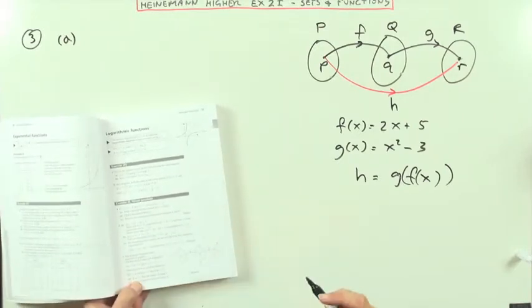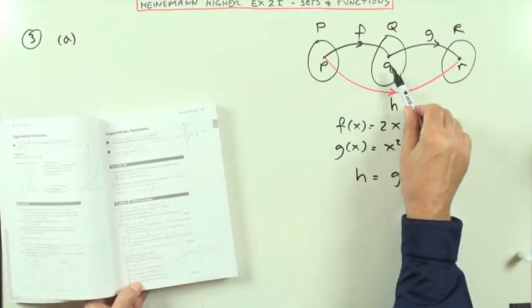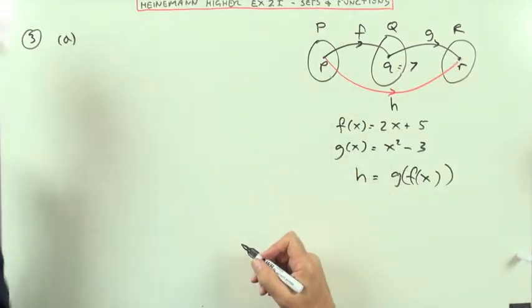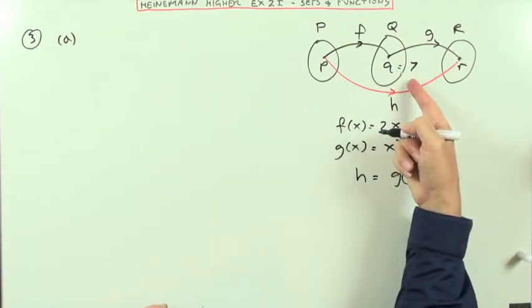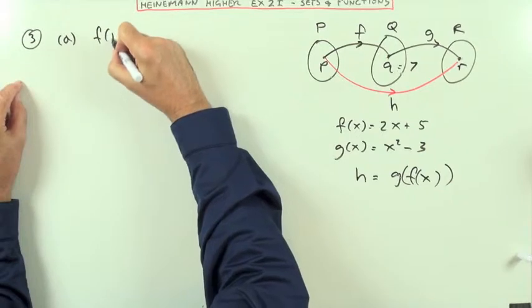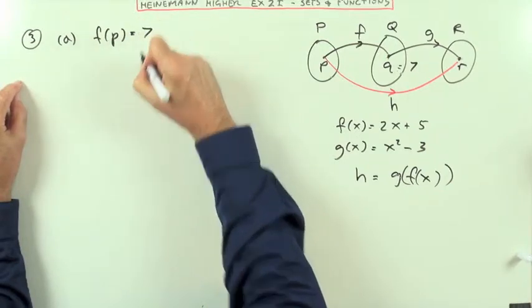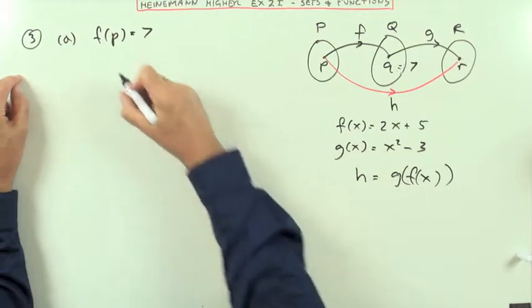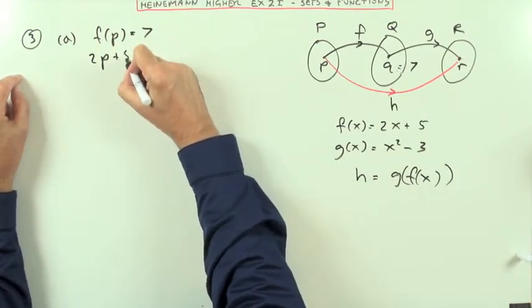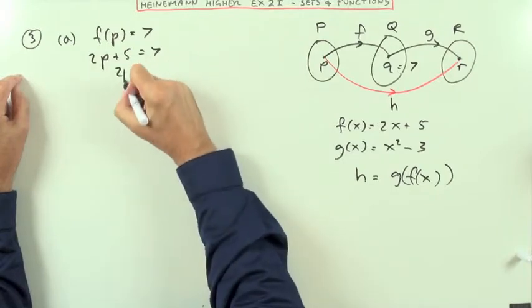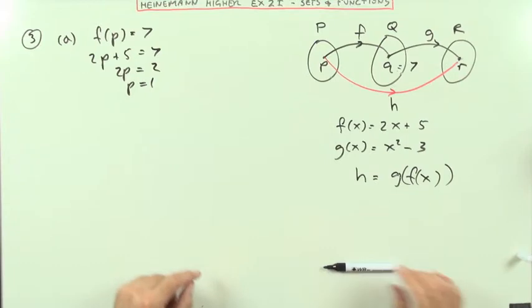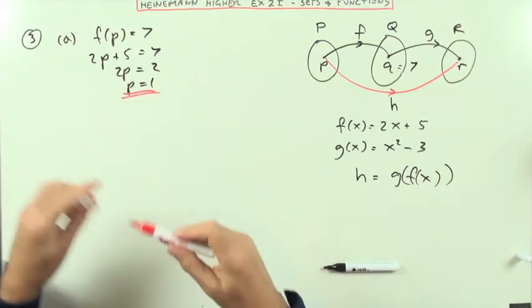If q equals 7, what's the value of p and what's the value of r? So if that q equals 7, well how would you arrive at that q? You would start with p and let f act on it. In other words, f acting on p should give you the answer 7. What does f do? It doubles the thing it acts on, so it doubles the p and adds 5 and gives 7 as an answer. So 2p should equal 2, so that means that p should be 1.